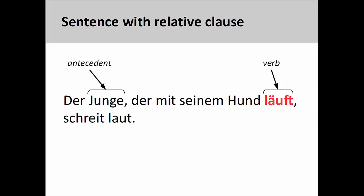As the relative clause is a type of subordinate clause, the third-person singular present tense verb läuft, runs, comes in the final position at the end of the clause. When creating the extended modifier, we will change this verb into a present participle before inserting it into the extended modifier. As we will see in the coming slides, this step will be performed first.